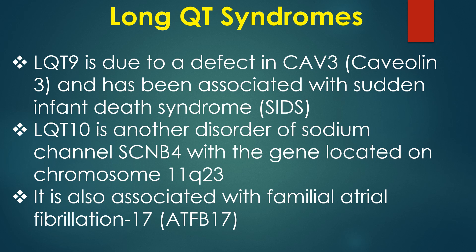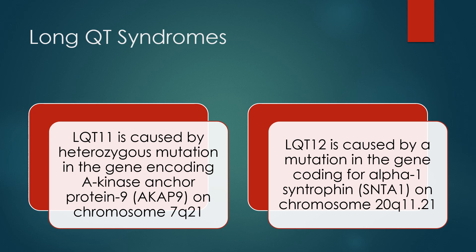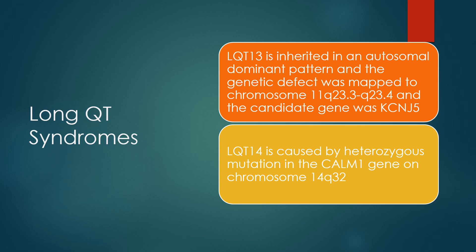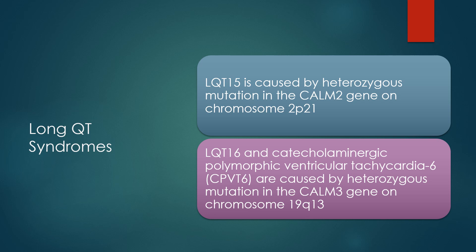LQT11 is caused by heterozygous mutation in the gene encoding A-kinase anchoring protein 9 on chromosome 7. LQT12 is caused by mutation in the gene encoding alpha-1 syntrophin on chromosome 20. LQT13 is autosomal dominant with the genetic defect mapped to chromosome 11 and candidate gene KCNJ5. LQT14 is caused by heterozygous mutation in the CALM1 gene on chromosome 2. LQT16 and catecholaminergic polymorphic ventricular tachycardia 6 are caused by heterozygous mutation in the CALM3 gene on chromosome 19.